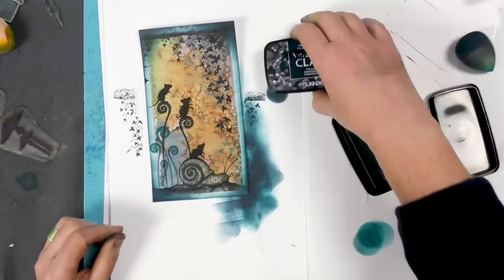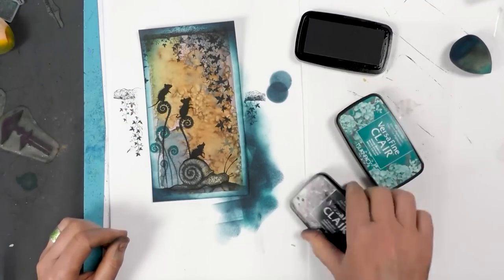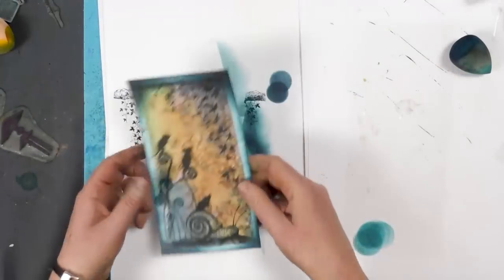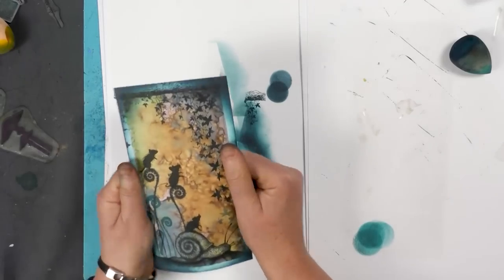And literally just kiss the edges with the darker colour. Make sure I've got the right lid for the right ink, otherwise I'll have a pleasant surprise next time. So I'm just going to bend that back into shape.